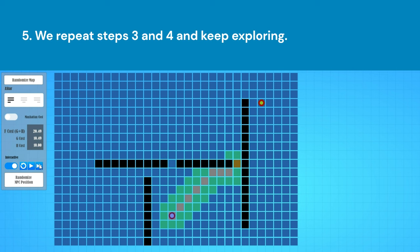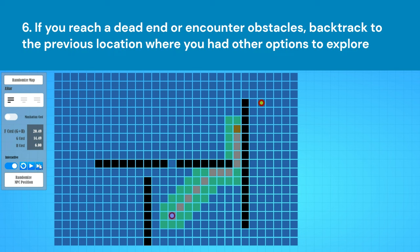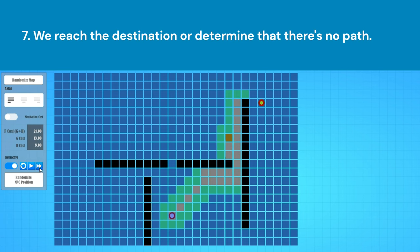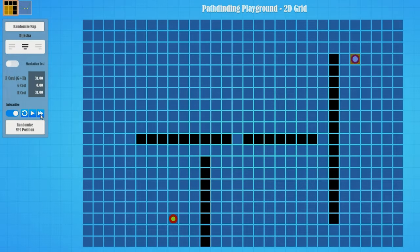Step 5: Repeat steps 3 and 4, keeping exploring from the current location, evaluating options, and choosing the best one until we reach the destination or can't go any further. Step 6: If you reach a dead end or encounter obstacles, backtrack to the previous location where you had other options to explore. Step 7: Eventually, we will either reach the destination or determine that there's no path to get there. This general strategy is the basis for various pathfinding algorithms, such as A-star, Dijkstra, and breadth-first search.